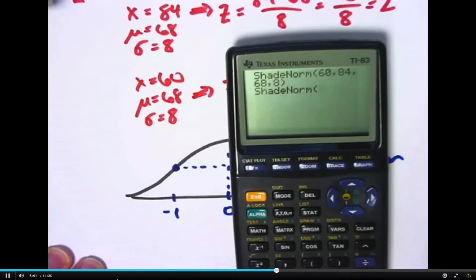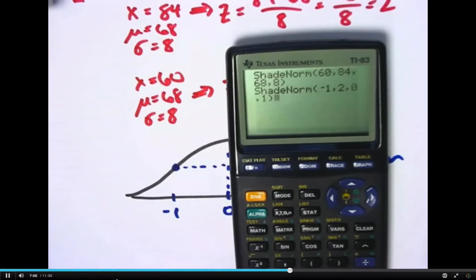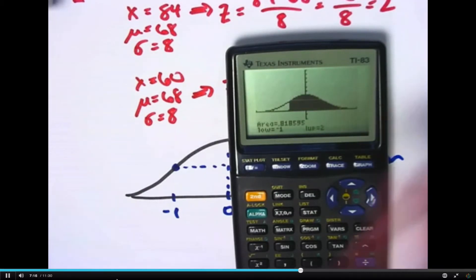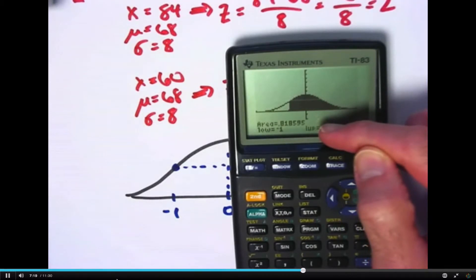I'm going to answer the same question I did before. But now I'm going to use the standard normal distribution. 60 had a z-score of negative 1. 84 had a z-score of 2. The mean of the standard normal distribution is 0, and the standard deviation is 1. This will be shading a different area under a different curve, a different region, but it will have the same value for the area. It's an analogous region under a different normal curve, the standard normal curve, and look at that. The area is the same as it was before, about 0.8186.